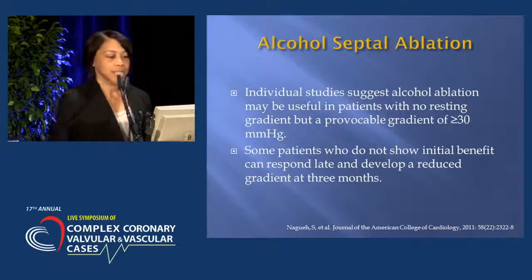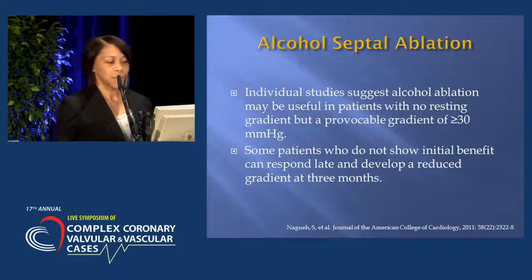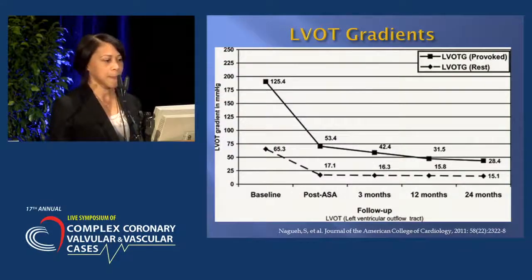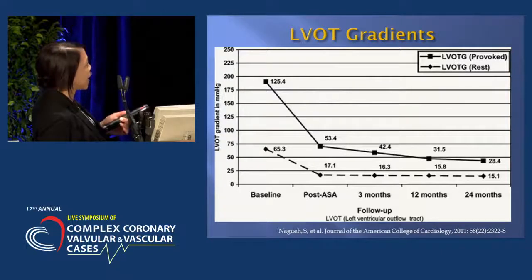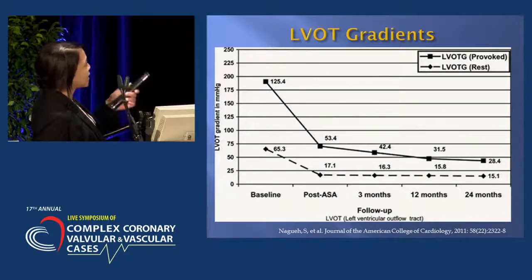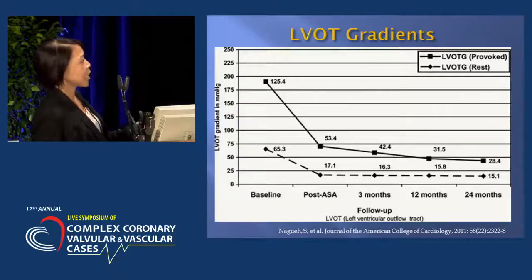Individual studies have suggested that alcohol ablation may be useful in patients with no resting gradient but a provocable gradient of greater than or equal to 30 millimeters. Some patients who do not show initial benefit can respond late and develop a reduced gradient at three months. The LVOT gradient data shows that initially both provoked and resting gradients are quite high, but immediately after the procedure there is a significant drop, and they continue to decline two years out.